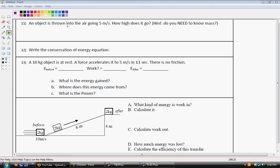Hey guys, alright, so number 11 says an object is thrown into the air going 5 meters per second. How high does it go? Hint, do you really need to know what the mass is? Well, let's figure out our conservation energy equation. At the beginning, our energy before, it's going 5 meters per second.